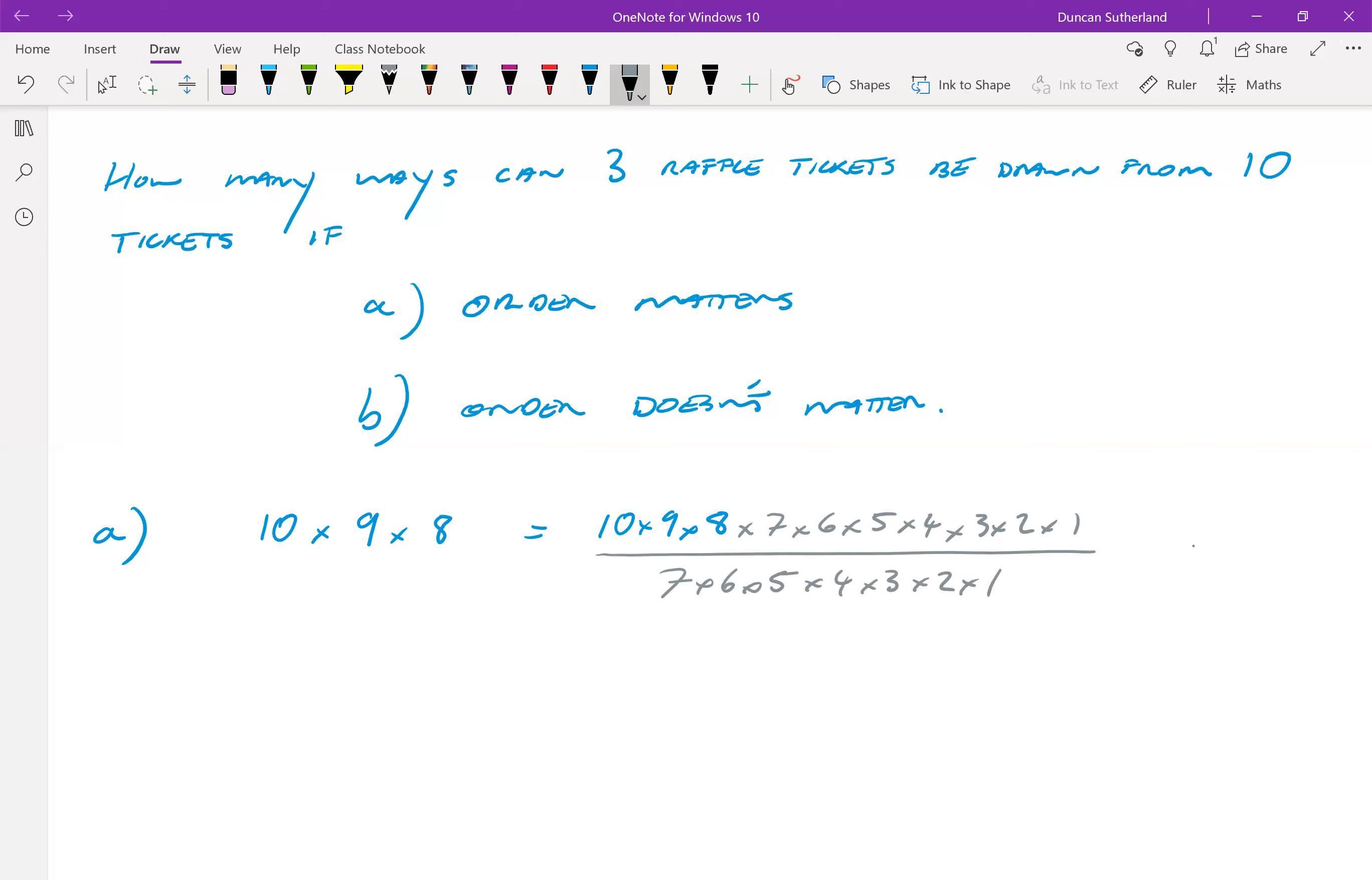We obviously know that we can rewrite this thing in two factorials, as two different factorials. This is 10 factorial divided by 10 minus 3 factorial.